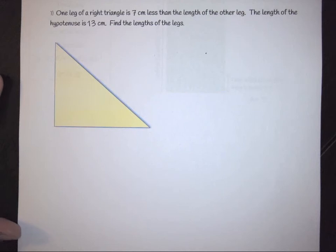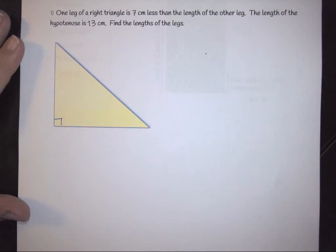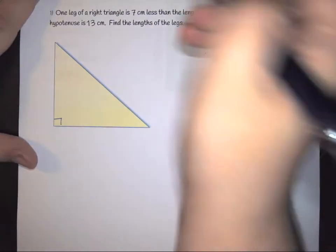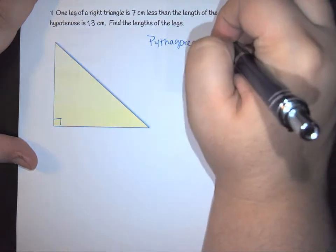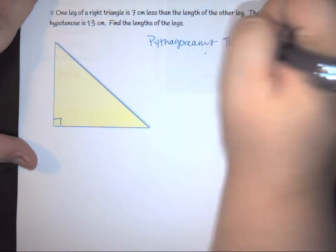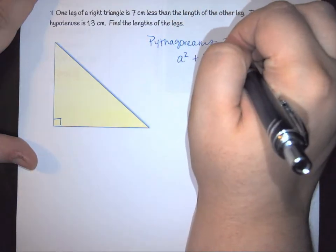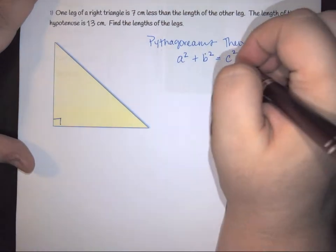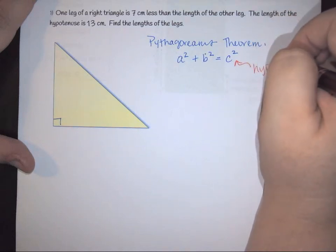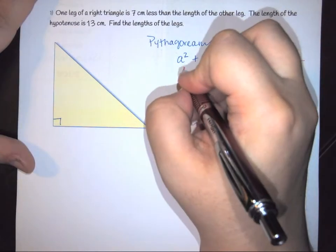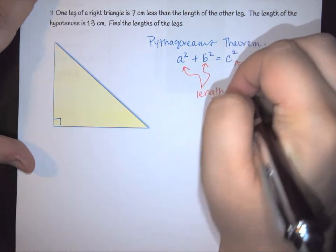So the first thing we have to take out of that is that we're talking about a right triangle. So a right triangle has one very special property, and that property that we have is Pythagorean's Theorem. Pythagorean's Theorem says a squared plus b squared equals c squared. Of that, we know c squared represents your hypotenuse.